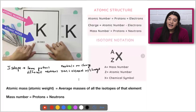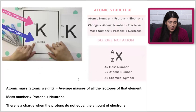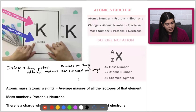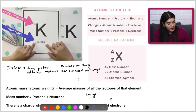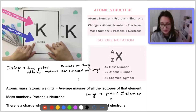Your proton count and your electron count are going to be different when you actually do have a charge. When there is a charge, the protons do not equal the amount of electrons. When it's neutral, they do equal each other.